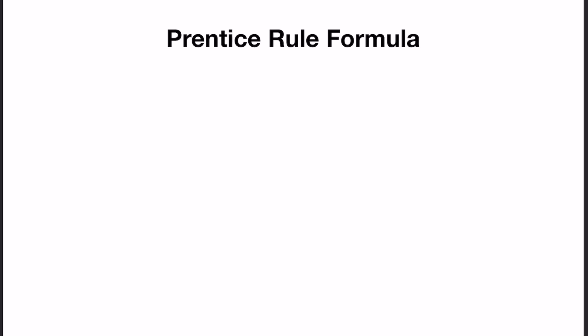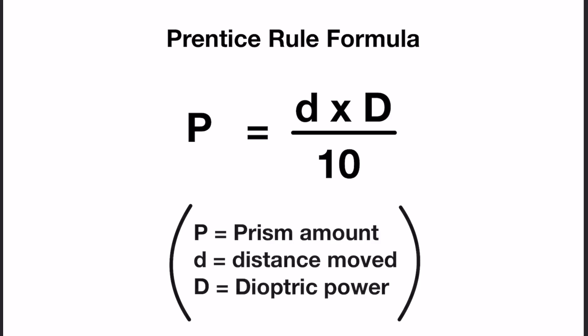Prism for decentration can easily be calculated using Prentiss rule formula. All you'll need is the power of the lens and the amount the OC needs to be moved on the blank.